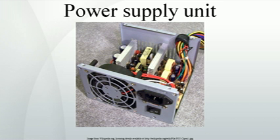Most desktop personal computer power supplies are a square metal box and have a large bundle of wires emerging from one end. Opposite the wire bundle is the back face of the power supply, with an air vent and an IEC 60320 C14 connector to supply AC power. There may be a power switch or a voltage selector switch or both. A label on one side of the box lists technical information about the power supply, including safety certifications and maximum output power.